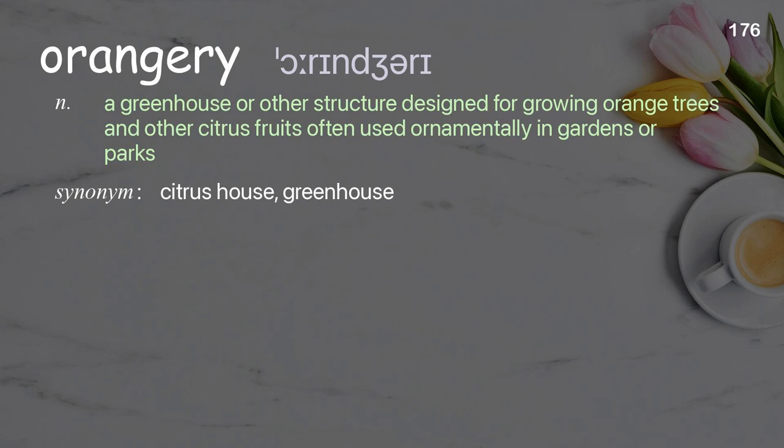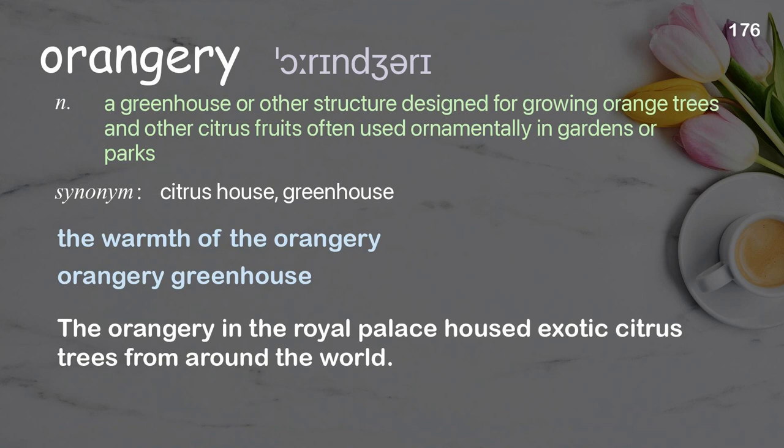Orangery: a greenhouse or other structure designed for growing orange trees and other citrus fruits, often used ornamentally in gardens or parks. Examples: The warmth of the orangery. Orangery greenhouse. The orangery in the royal palace housed exotic citrus trees from around the world.